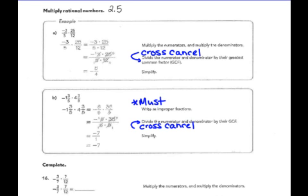If there is one negative, or an odd number of negatives in the product, our answer is also going to be negative. So negative 3 fifths times 25 twelfths is equivalent to negative 5 fourths. Simplifying that — since 4 goes into 5 and that's an improper fraction — you would get negative 1 and 1 fourth.